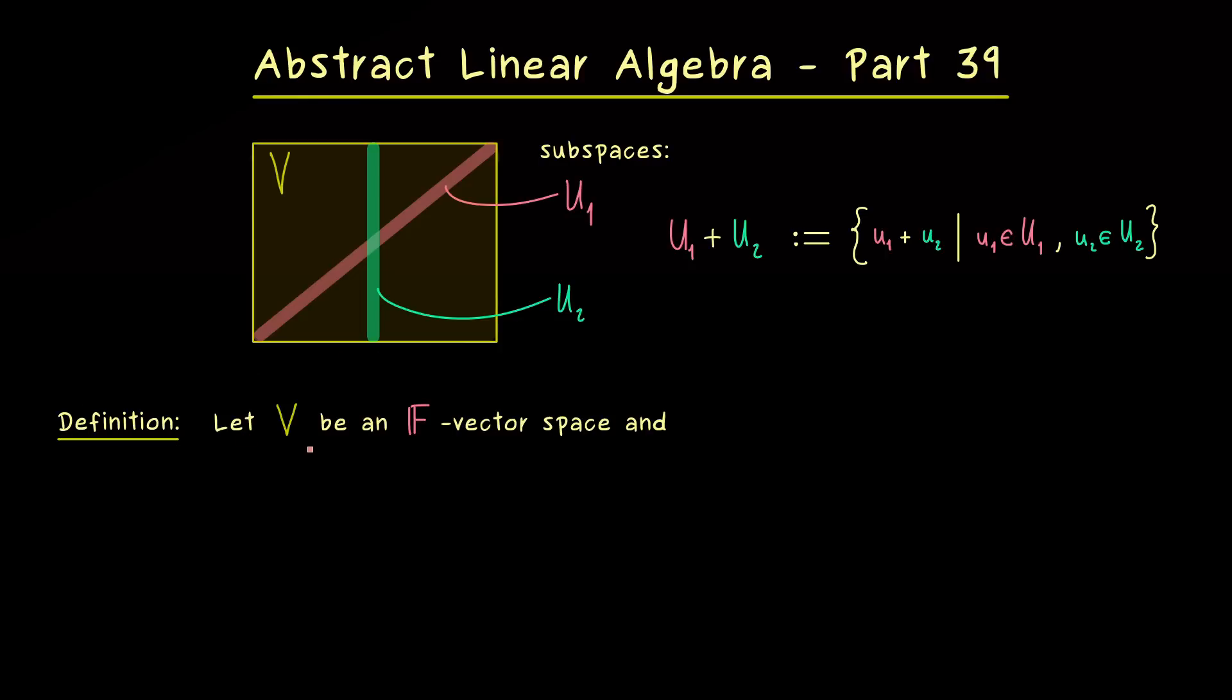And the assumptions are exactly the same as before. We have a general F-vector space V and two subspaces U₁ and U₂. And naturally, we don't have to say anything about the dimensions of the subspaces.